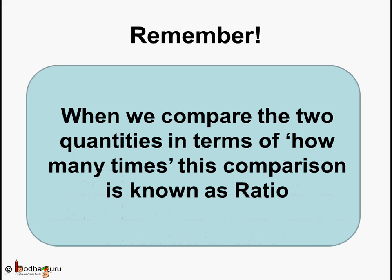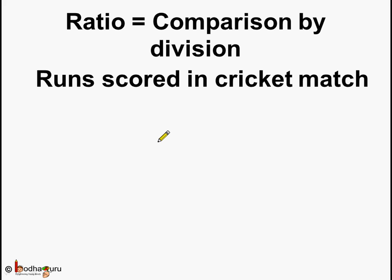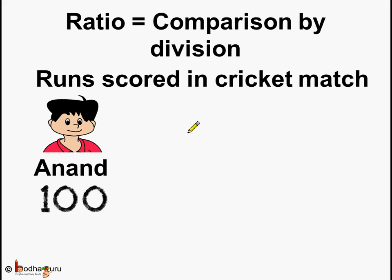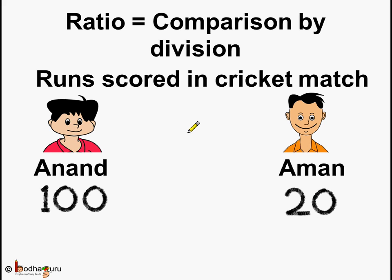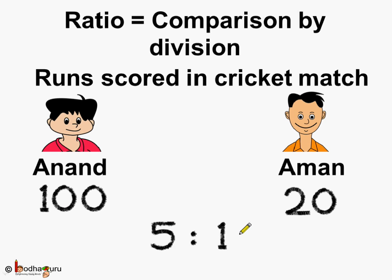Remember, when we compare two quantities in terms of how many times, this comparison is known as ratio. Ratio is comparison by division. So the ratio of runs scored in the cricket match — Anand scored 100 and Aman scored 20 — the ratio of runs scored by Anand to the runs scored by Aman is 5 is to 1. This means for every run scored by Aman, Anand scored 5 runs.